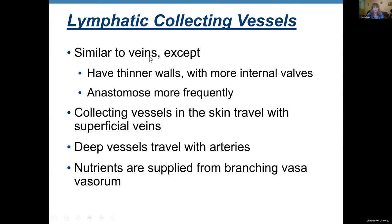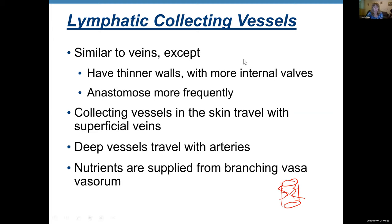Collecting vessels are similar to veins, except they have thinner walls with more internal valves. Anastomosis is very frequent. Collecting vessels in the skin travel with superficial veins, and deep collecting vessels travel with arteries. Nutrients are supplied by branching vasa vasorum — special capillaries that supply blood to the bigger arteries. So a big artery has its own blood supply called vasa vasorum, and the same vasa vasorum supply collecting ducts with oxygen, because everything is made of cells and needs oxygen and nutrients.